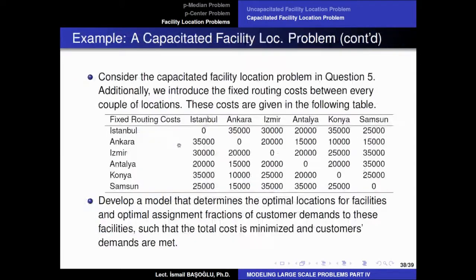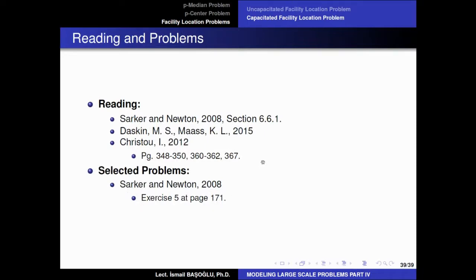This problem with fixed routing costs will be complex to solve. For small instances, listing feasible solutions and calculating their costs may be easier than a linear programming approach. For large problems, a linear programming approach may yield the optimal solution, or an acceptable heuristic methodology may produce a suboptimal solution. This is the reading assignment regarding facility location problems: P-median, P-center, and facility location problems. There is also an exercise on page 107 in Sarko and Newton's book.